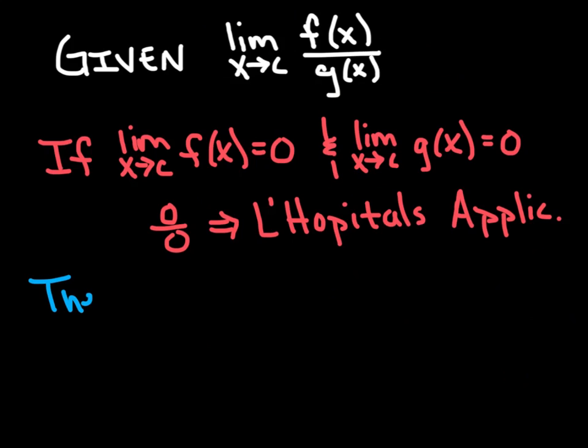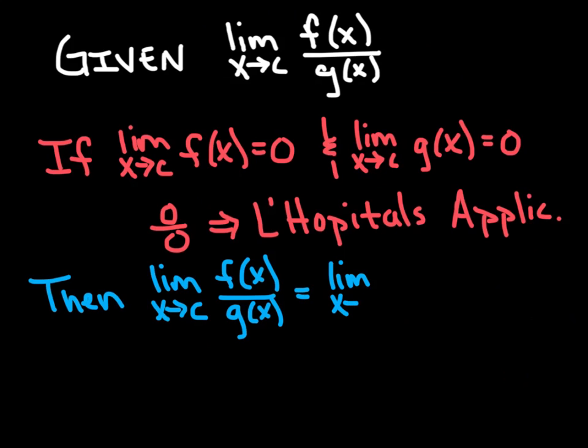Okay, so if that's the case, then we could say the limit as x approaches c of f(x) divided by g(x) is equivalent to the limit as x approaches c of f'(x) divided by g'(x). So basically, we're going to derive the numerator. We're going to derive the denominator. We're going to treat them as if they're separate functions, so we're not doing quotient rule. And then once I get done deriving both the numerator and denominator, I'm going to now resubstitute my c in for x and evaluate that limit.